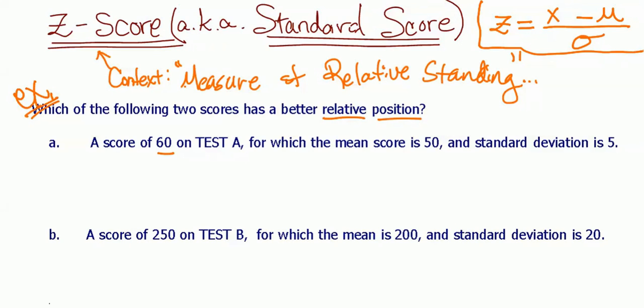B, a score of 250 for test B. The mean there is 200, and standard deviation is 20. So if I want to write out my variables, I need my X, I'm going to need a mean, and I'm going to need a standard deviation. So here I'm going to subscript it. Actually, I'll subscript it with an A since it's test A. So X sub A is 60, the mean there is 50, and standard deviation is 5.